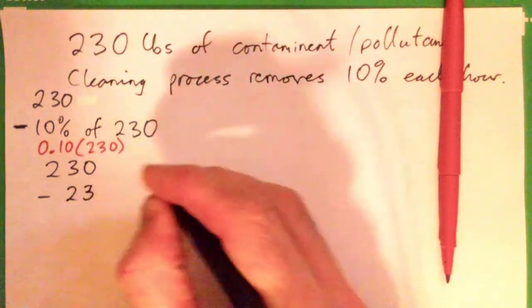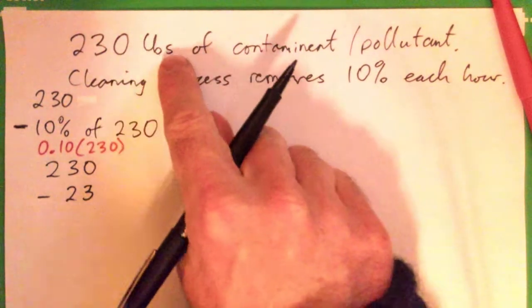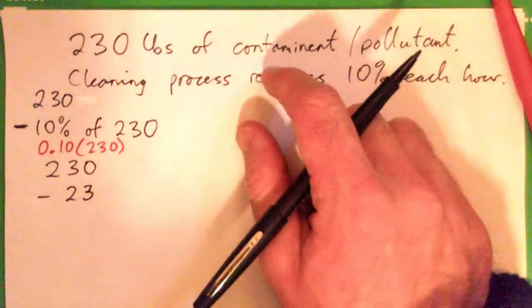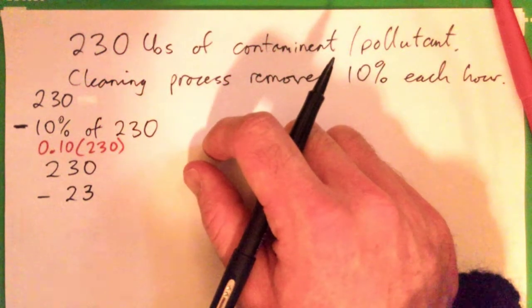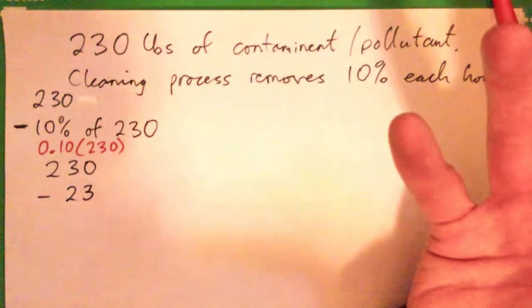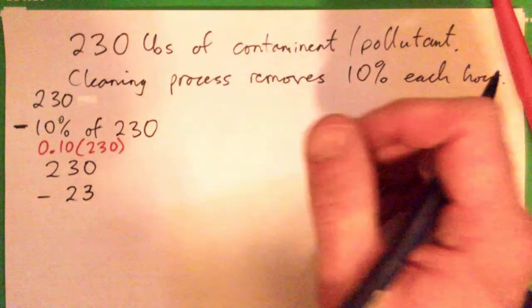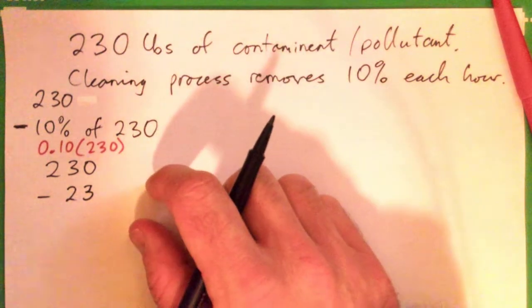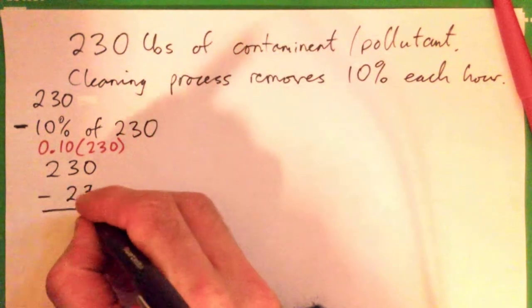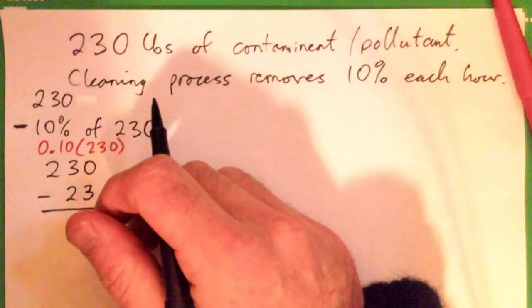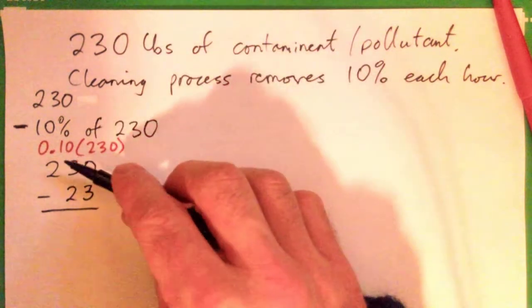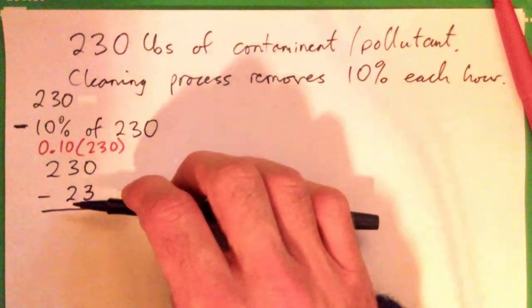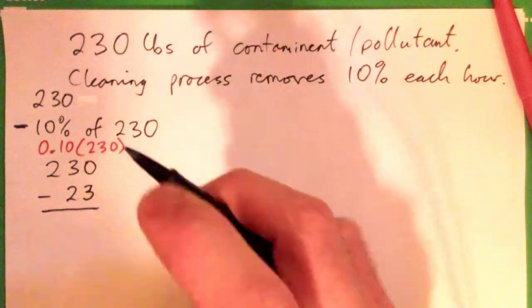So we started with 230 pounds of pollutant. Let's call it oil, like a bunch of oil that was dumped in a pond or some type of water source. We start with 230 pounds of the dirty oil and then we subtract 23 pounds of it. And so what do we have left?